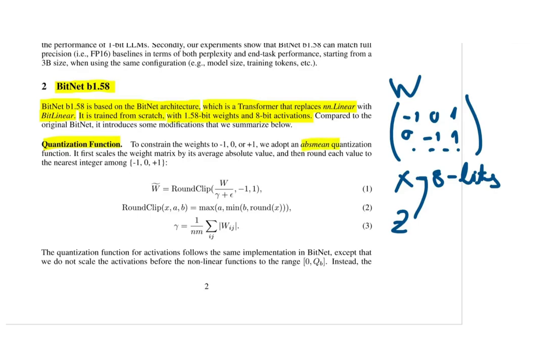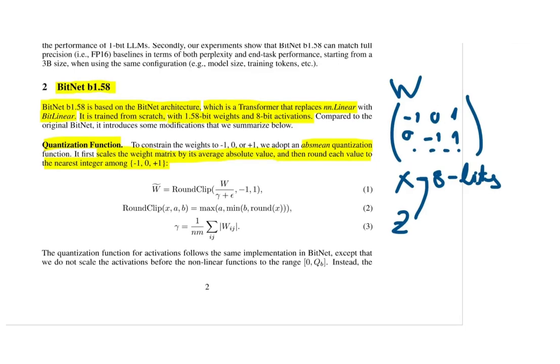The quantization function they use is the AbsMean quantization function which scales the weight matrix by averaging the absolute value and then rounds each value to the nearest integer among minus one, zero, and plus one. The authors mathematically define the quantization function: here you have W which are the weights of our model and W tilde which are the output weights. Here we have epsilon which is a very low number and gamma which we'll see shortly. The RoundClip function takes our weights divided by those two numbers, minus one, and one. Gamma is defined as the sum of the absolute value of all our weights divided by n multiplied by m, so basically gamma is just a normalizing factor for W. When we divide W by gamma plus epsilon, we normalize the weights that we give to this function.